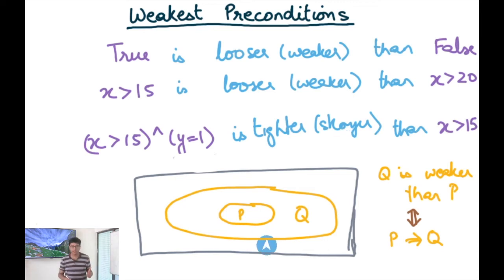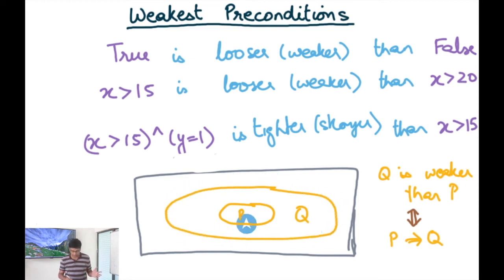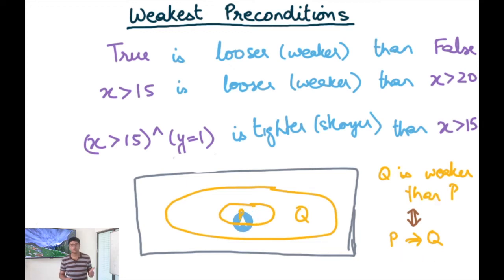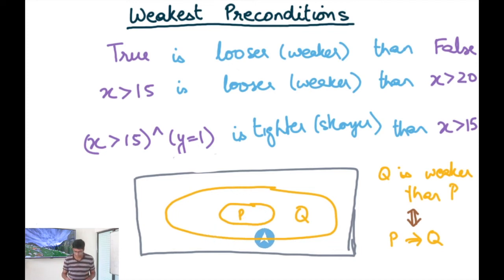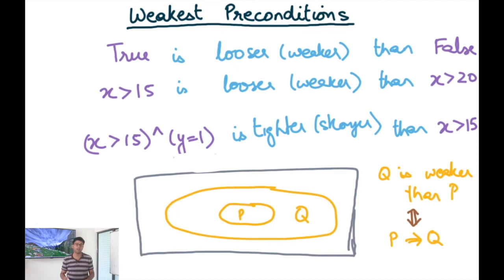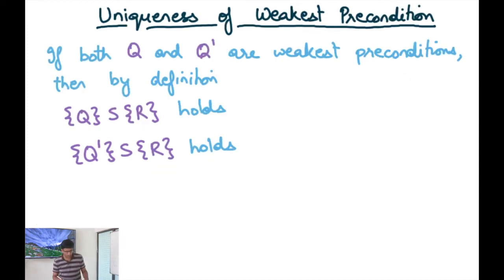Another way to look at predicates is through a Venn diagram representation. If q is represented by an outer oval and p by an inner shape, then q is looser than p — exactly like saying p implies q, because any point satisfying p also satisfies q. When I want the weakest precondition of r across s, I'm looking for the largest set that guarantees r holds after s executes. Any other precondition would be strictly contained within that largest set.